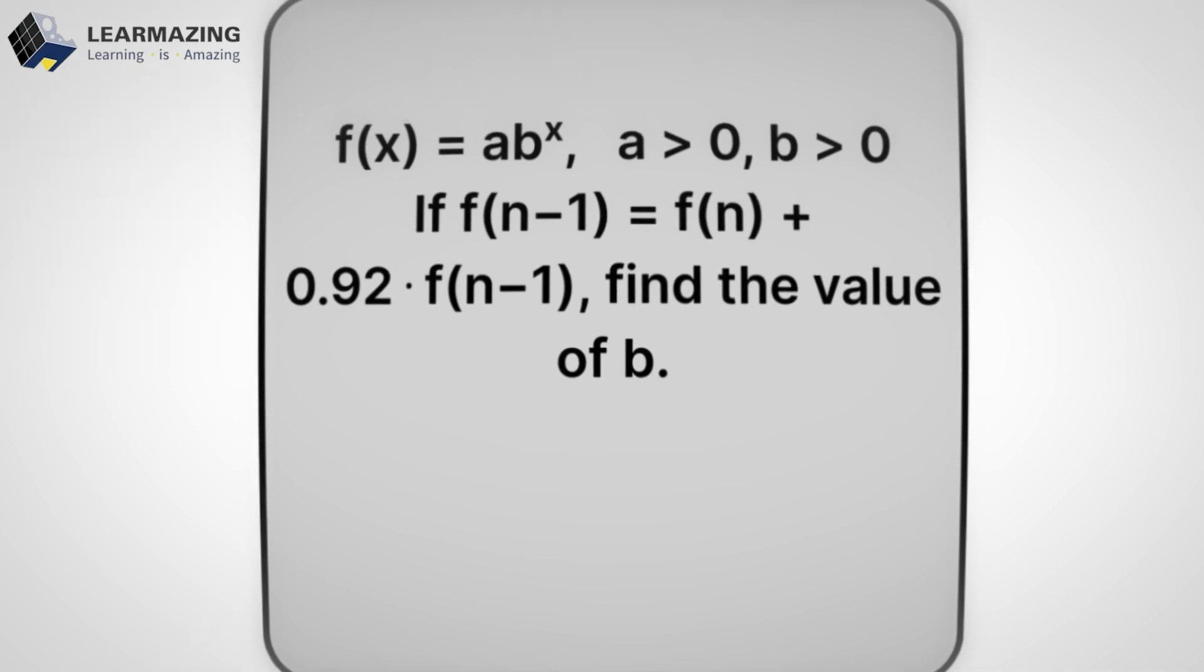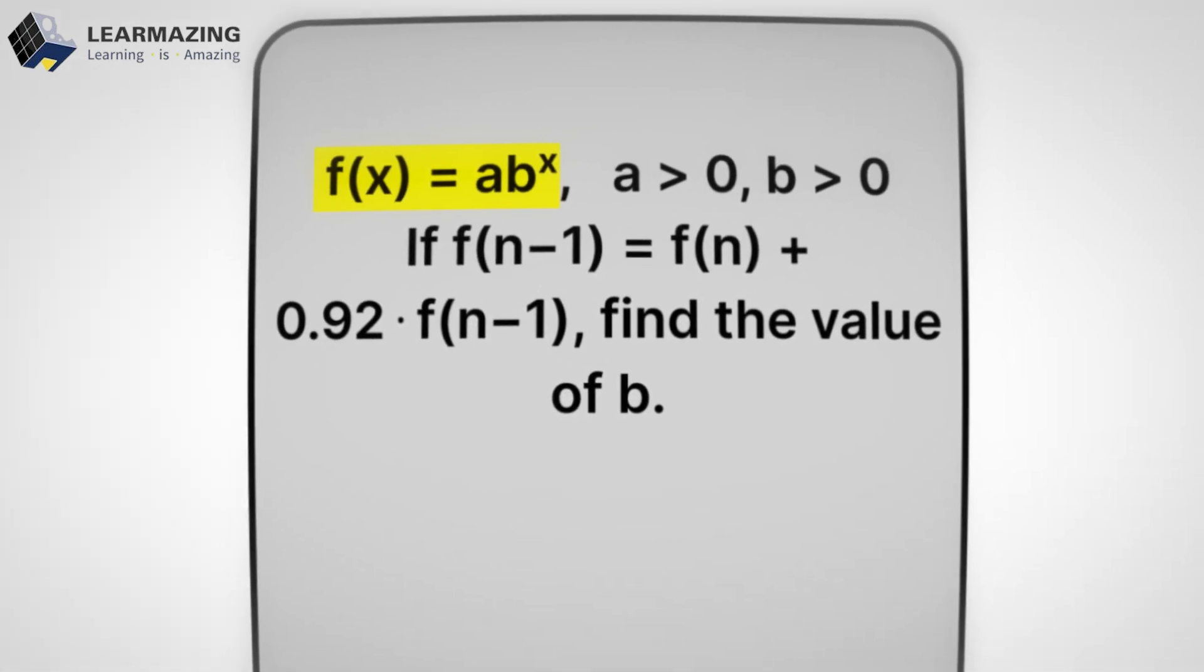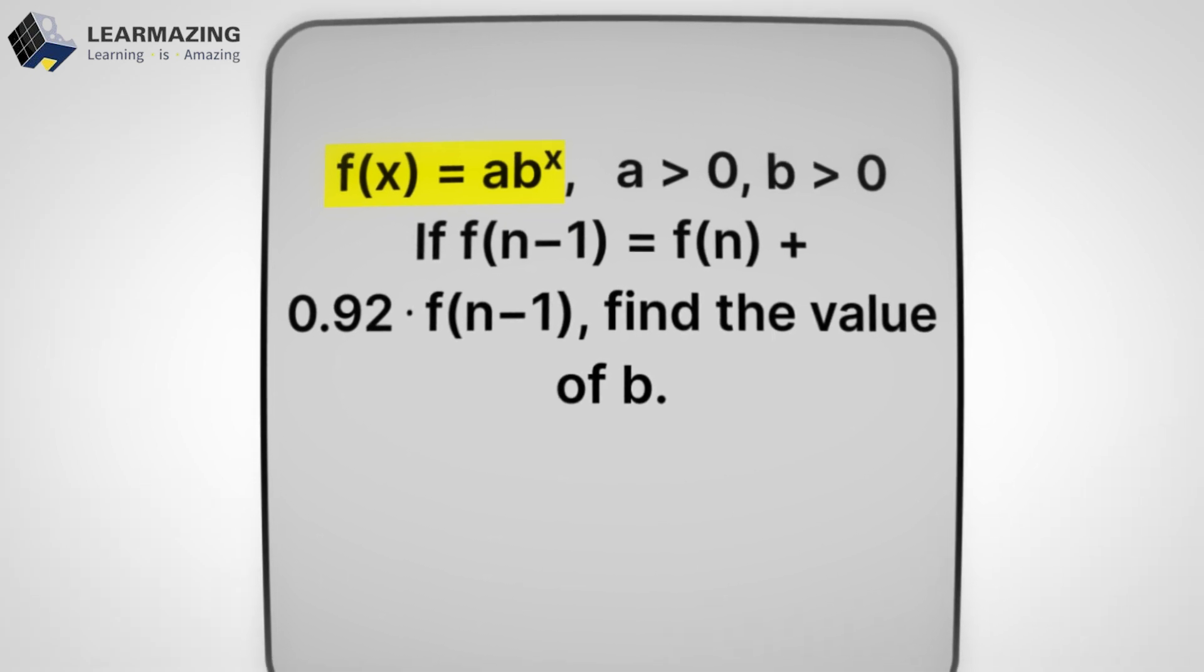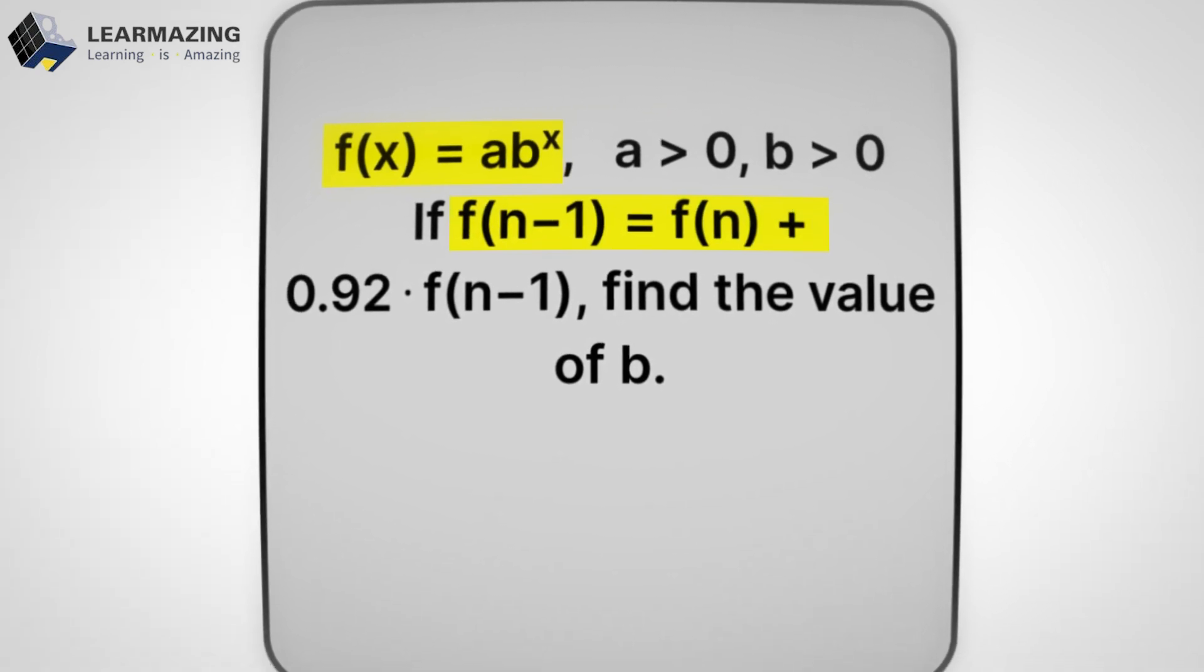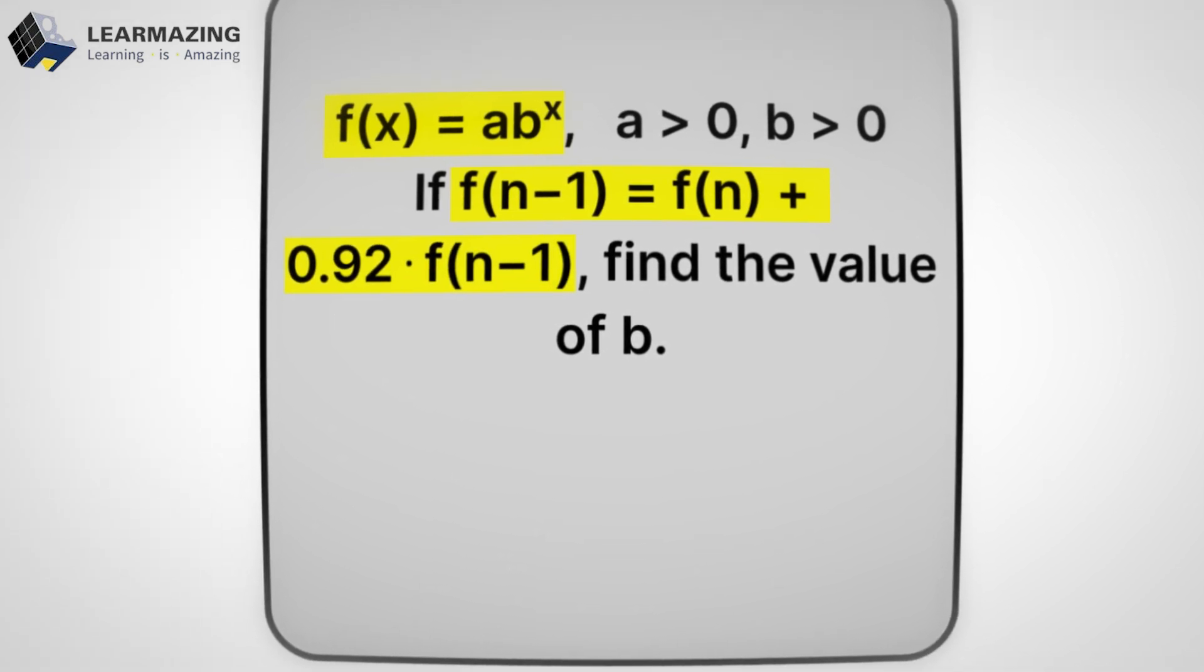Alright, here's something most students completely miss when tackling exponential functions on the SAT. Imagine you're staring at this problem. f(x) = ab^x where a and b are positive. If f(n-1) = f(n) + 0.92 × f(n-1). Two types of students right now.